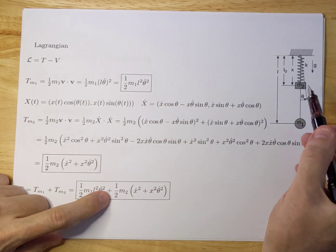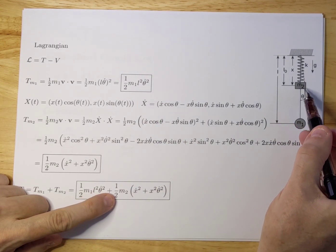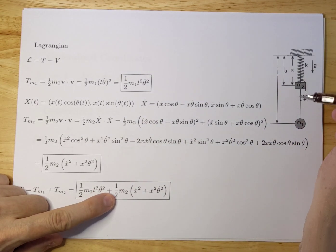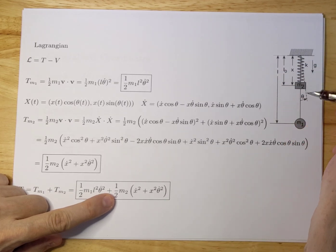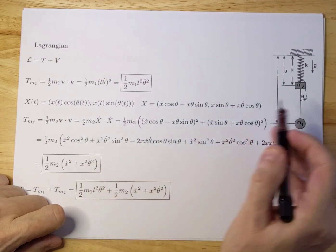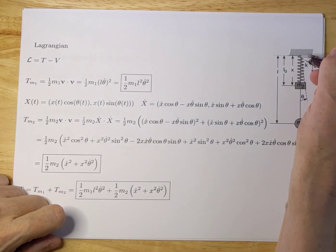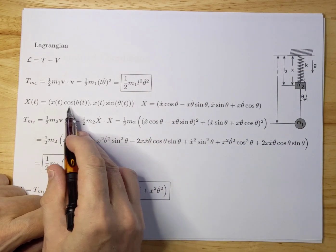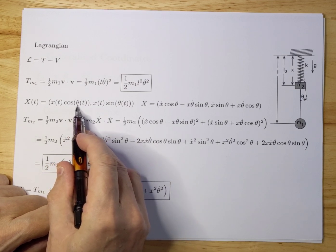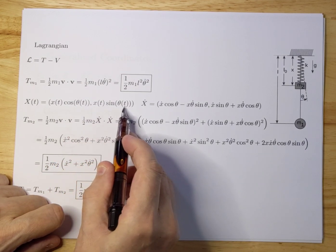Now let's try to find the kinetic energy of M2. M2 has the ability to go up and down and rock back and forth, so it's a combination of two things. The position of M2 can be written as X(t) cosine theta, X(t) sine theta. This is a vector in the X direction and in the Y direction.